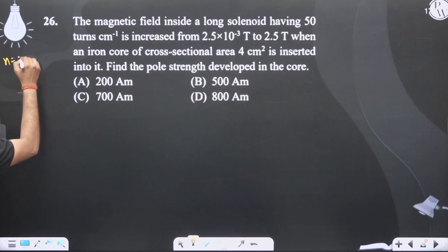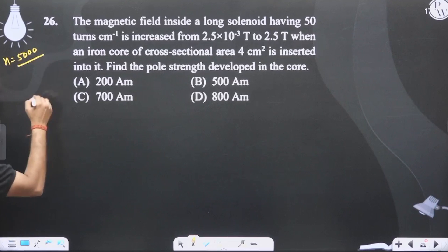Number of turns here, 5000 turns per meter, is increased from 2.5 × 10^-3 T to 2.5 T when a soft iron of cross-section area 4 centimeter square is inserted. Find the pole strength developed in the core.